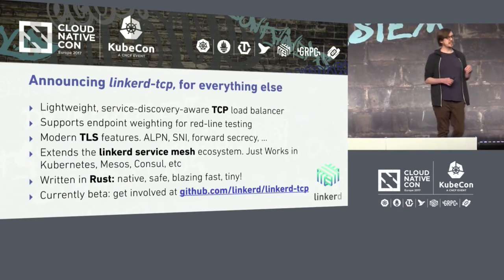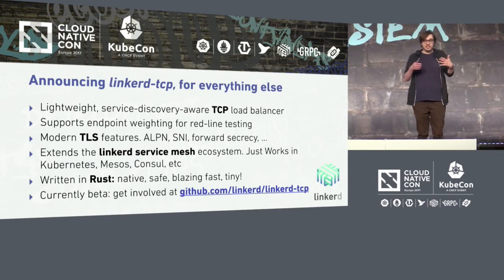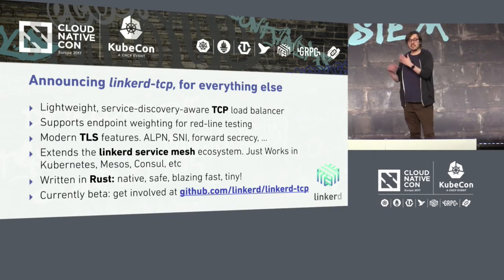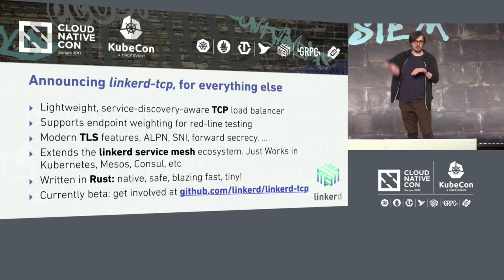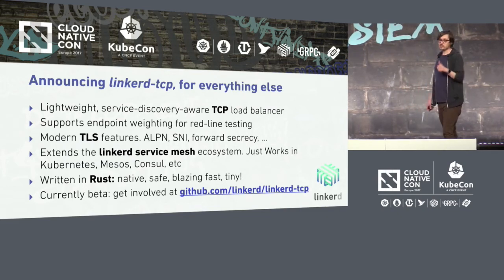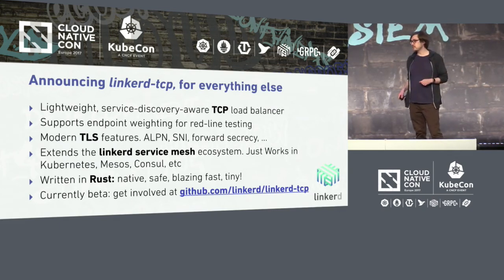Finally, I'm very excited to announce Linkerd TCP. This is a new project — it just went on GitHub yesterday before I got on the flight. Linkerd is only for HTTP or protocol-aware traffic, which leaves a lot of legacy applications and databases in the dust. So we wrote a very minimal, lightweight TCP and TLS load balancer. It does weighting for red-line testing, and all the bells and whistles that Linkerd has, minus the protocol awareness. It's written in Rust, so it's safe, native, fast, and memory efficient. It's got a new GitHub repo, so please come get involved — I'd love more testers and contributors.